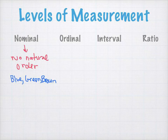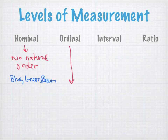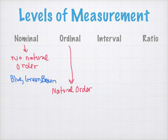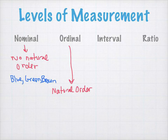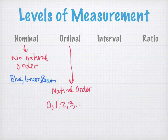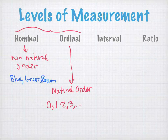Ordinal is usually when we're categorizing things in steps — it has a natural order. For example, if we were sampling baseball or basketball players and they had to select their jersey number, that data would be considered qualitative because it's not measuring something. But you could put it in order: zero, one, two, three, and so forth — that has a natural order to it. Nominal and ordinal are both typically associated with the categorical type of data.